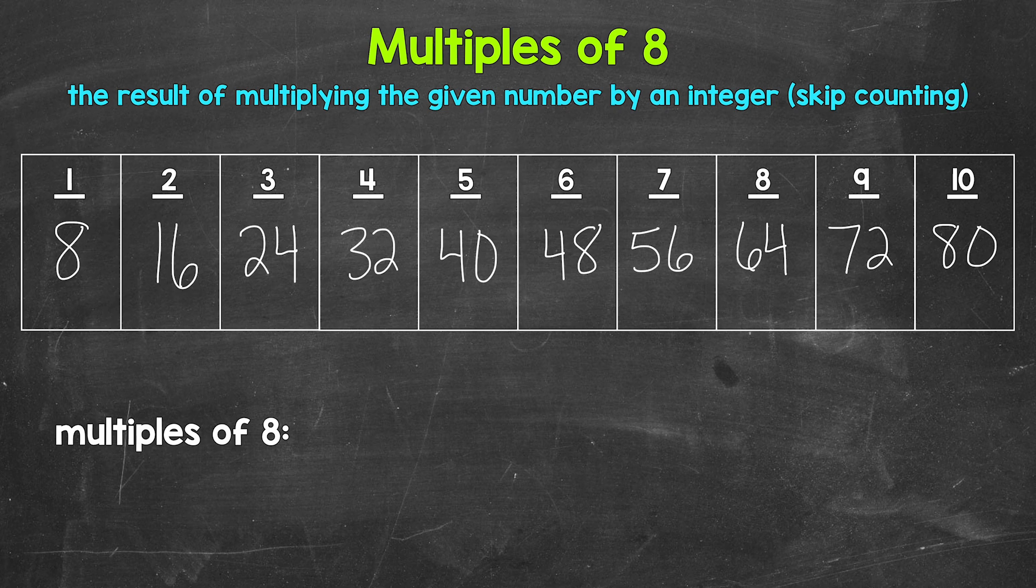Now, do multiples stop there? No, they continue on. Now let's write these multiples in a list below. And you'll notice we're just counting up by eight. Like I mentioned earlier, another way to think of multiples is to skip count.